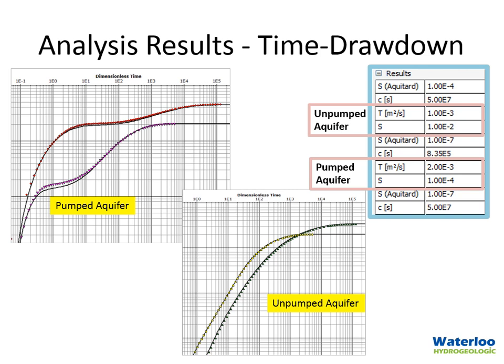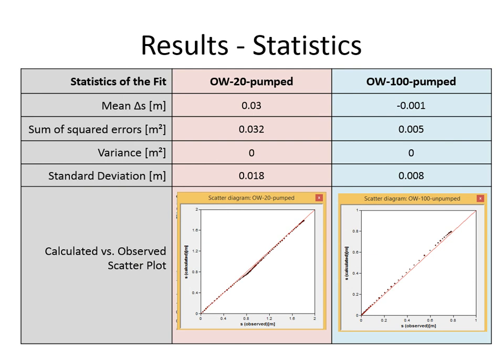The dimensionless plots show data points from the pumped aquifer on the left and the unpumped aquifer on the right, each graph having two data series from the two observation wells. We input the parameter values into AquiferTest and compared them to the theoretical drawdown calculated from the multi-layer solution. There is a very nice match between the theoretical drawdown line and the actual data points from the 3D numerical model in both the pumped and unpumped aquifer. Additional statistical analysis shows very little difference between calculated and observed drawdown, confirmed by a calculated-versus-observed plot.